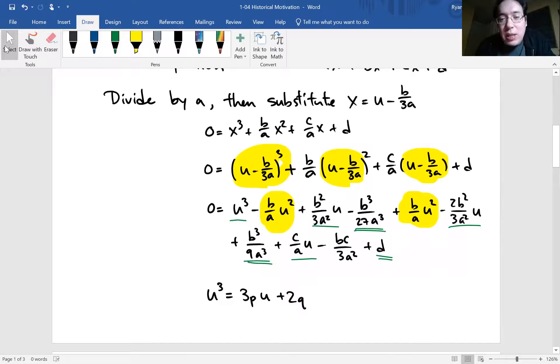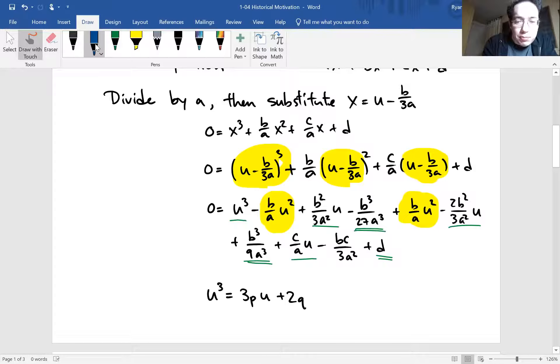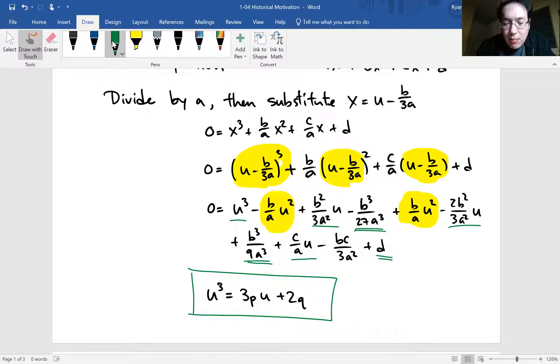Okay. So I brought the u³ to the other side. And the 3p is the coefficient of u you have on the right hand side. And 2q is the constant term on the right hand side. So you might be wondering, what is this 3 and 2 that appears here? So we're just renaming the coefficient here. So if you collect all the linear terms, you'll have some coefficient. Divide that by 3 and call that p.